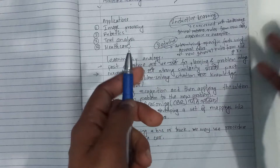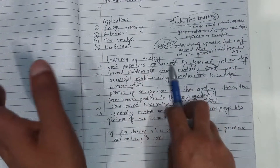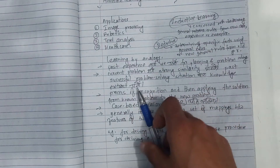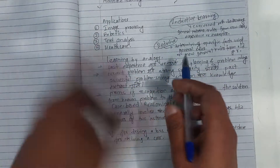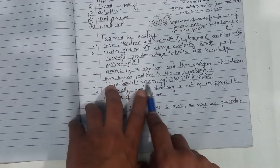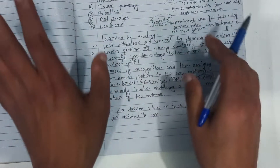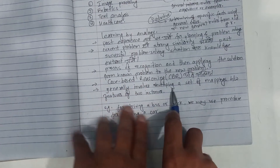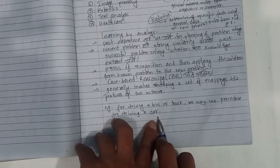Gain solving a problem in a particular domain — some similarity can help get the same problem solved and gain knowledge. For example, Bayes' theorem and machine learning use analogy. Recognition and applying the solution to a new problem — reasoning generally involves developing a set of mappings between features of two instances. For driving a bus or truck, we may use the procedure for driving a car.